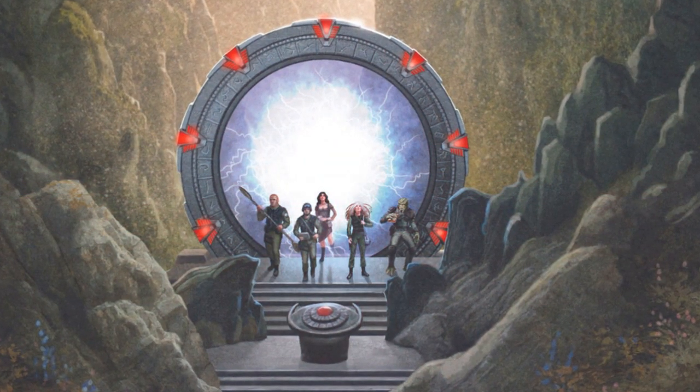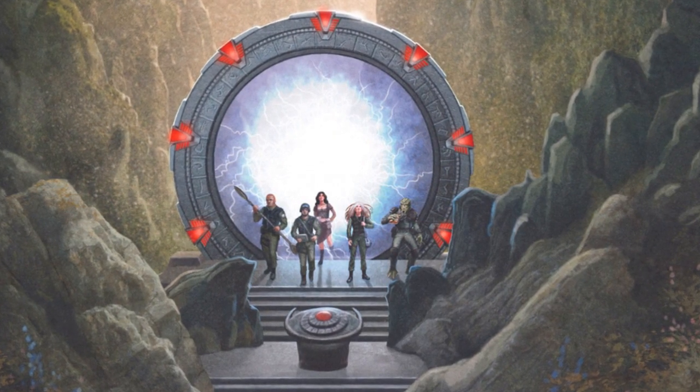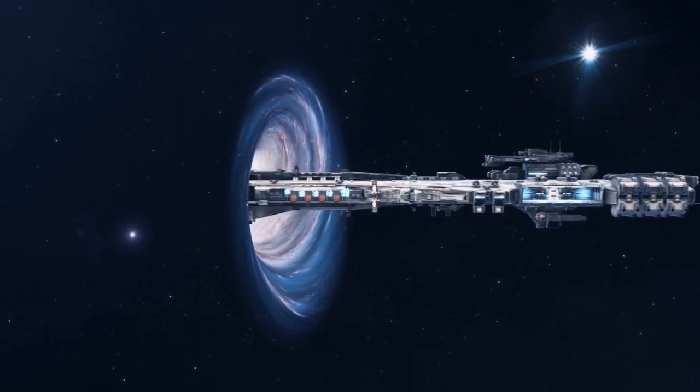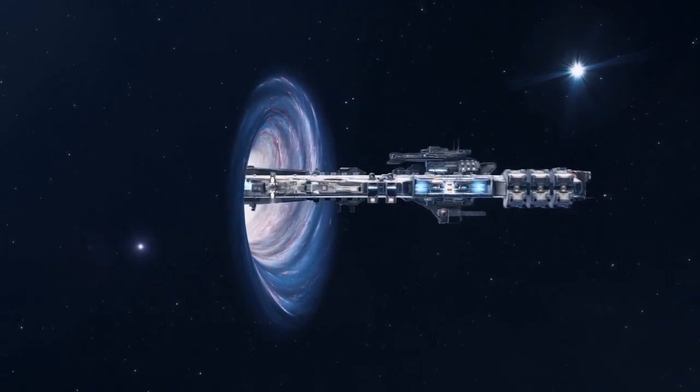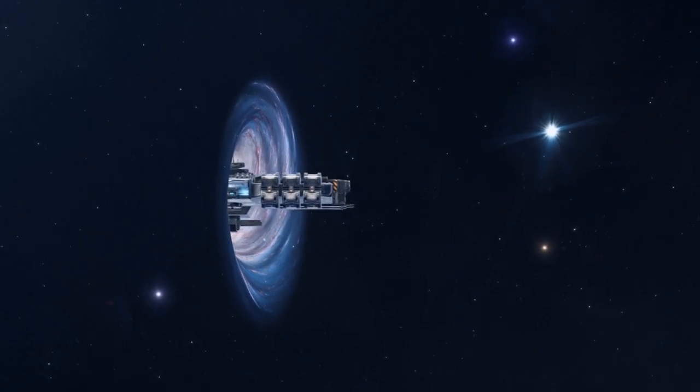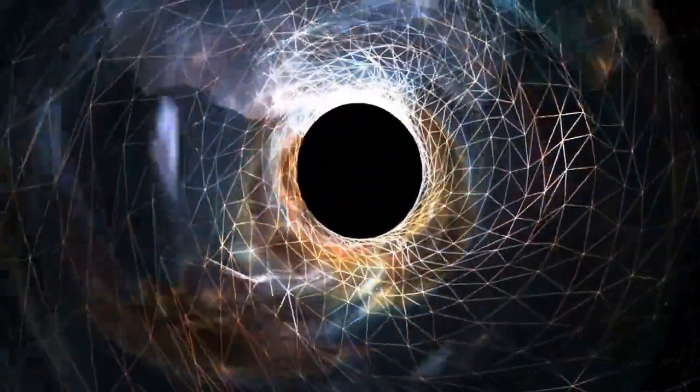A Stargate is typically depicted as a large ring-like device with a central spinning mechanism. It's portrayed as a portal that connects two distant points in space, allowing matter, energy, and information to traverse instantly between them. The concept raises intriguing questions about space-time manipulation, wormholes, and advanced technology far beyond our current understanding.